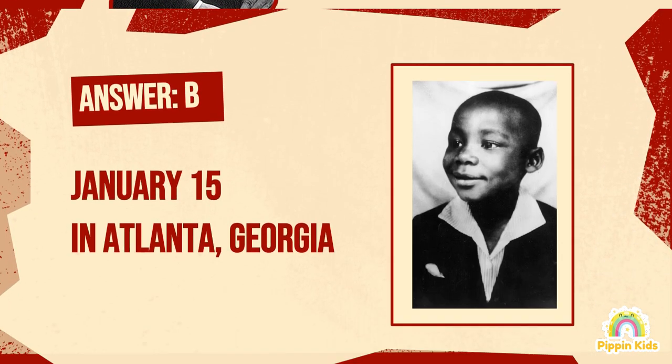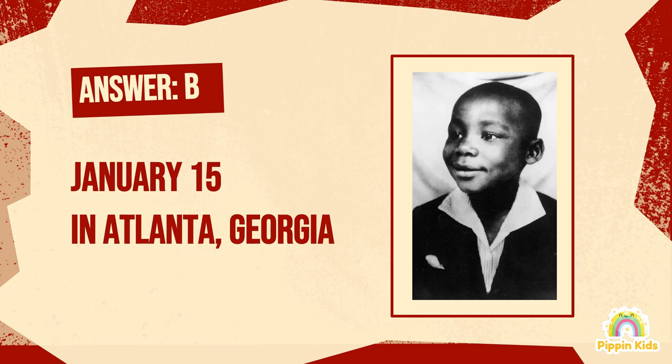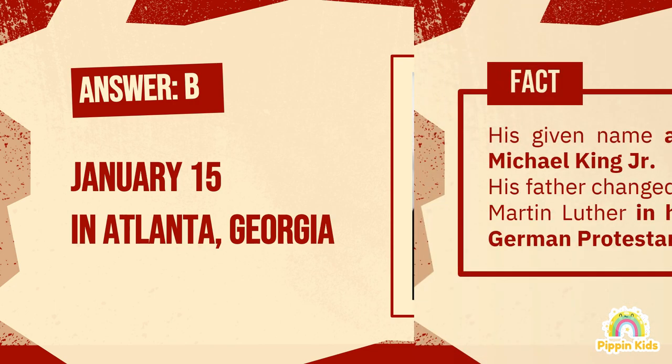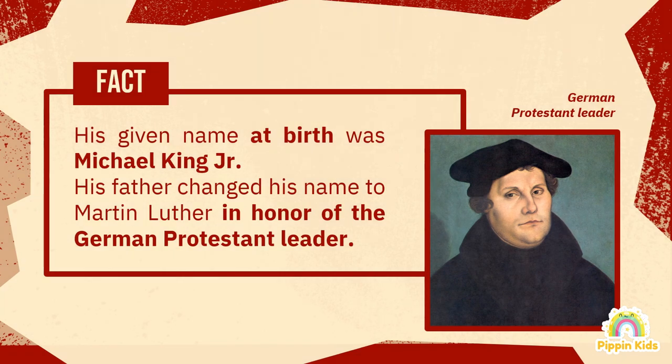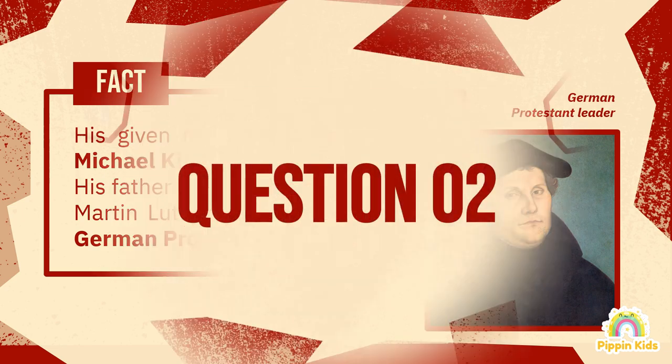The answer is B, January 15th, 1929 in Atlanta, Georgia. You may not have heard this before, but Martin Luther King Jr. was not his birth name. His given name at birth was Michael King Jr., but his father later changed both of their names to Martin Luther in honor of the German Protestant leader.